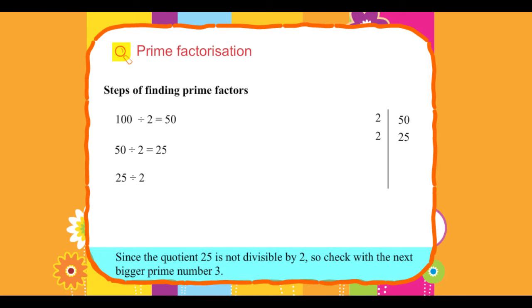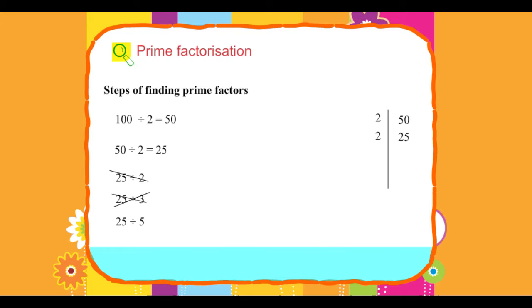Since the quotient 25 is not divisible by 2, check with the next bigger prime number 3. Since 25 is not divisible by 3, we will check with the next bigger number 5.